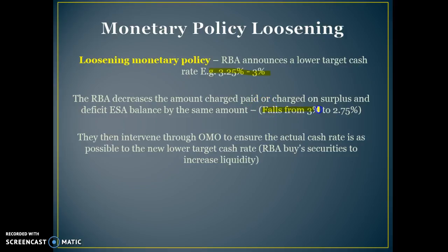If the RBA decreases the cash rate to 3%, they would decrease the amount that banks received on their exchange settlement accounts to 2.75% and charge them 3.25%. They then intervene through open market operations to ensure the actual cash rate is as close as possible to the new target cash rate by buying securities to increase liquidity.